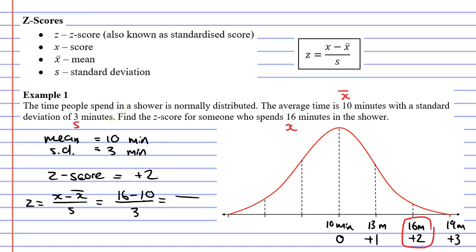At the top of our fraction, 16 minus 10 is 6. And 6 over 3 is 2, or more specifically, positive 2. You can see that using either method we got the same z-score.